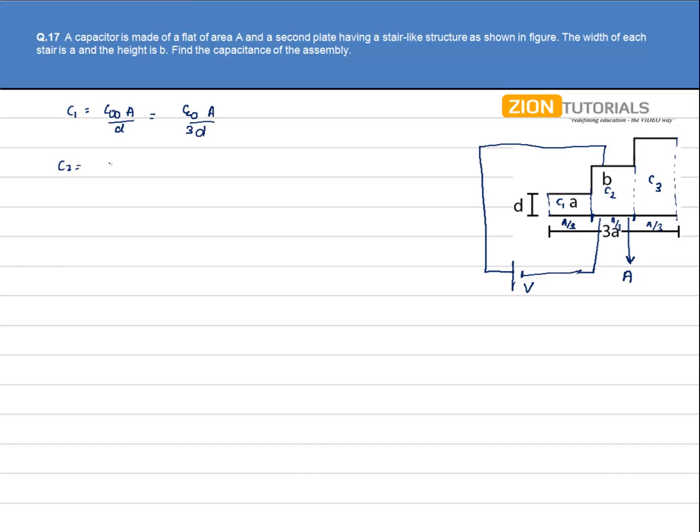Another capacitance, ε₀ times area A/3, and the distance between the plates is now increased by B. So it is D plus B.